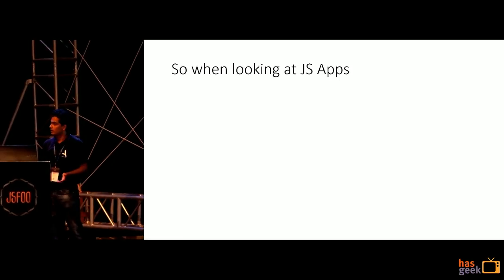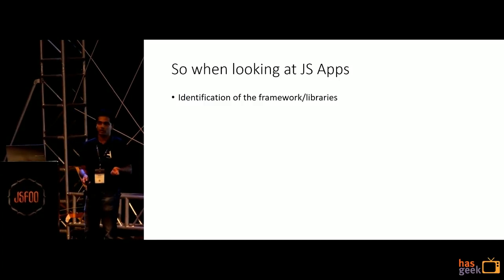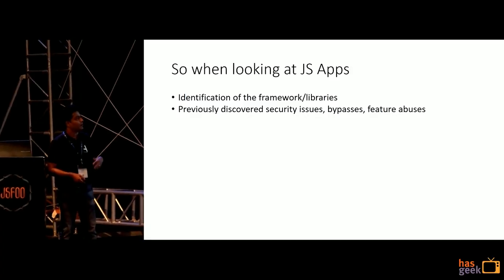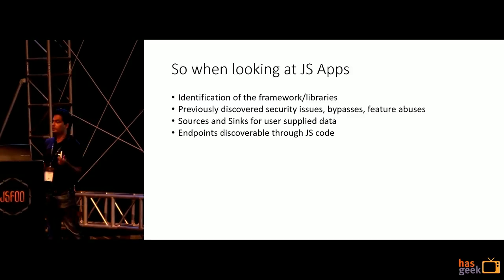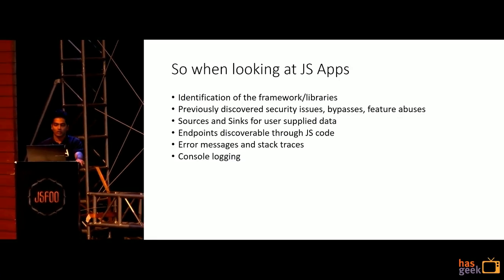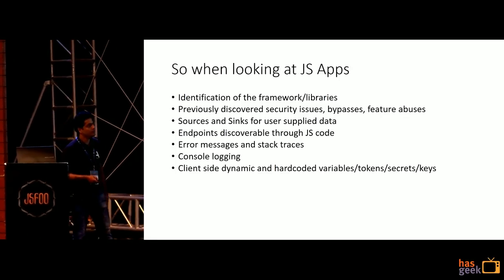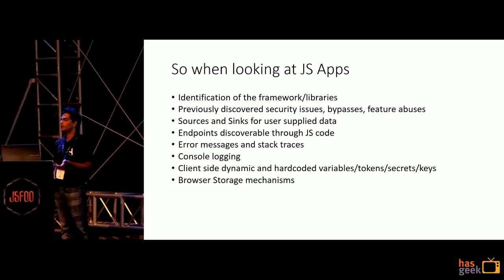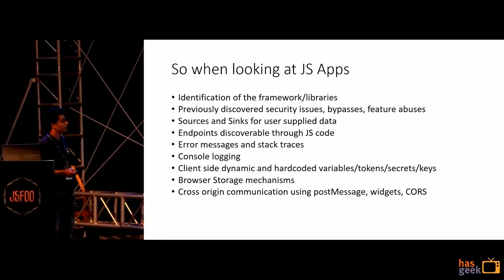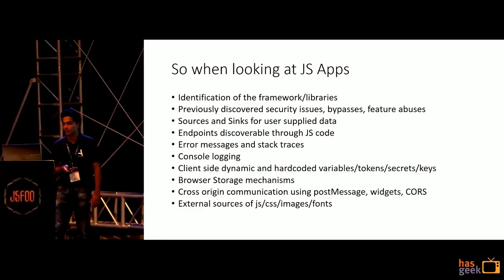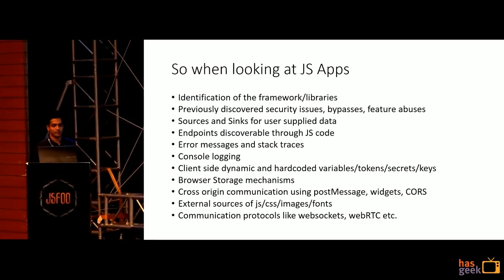When looking at JS apps, this is the takeaway of what attackers see and target: identification of frameworks and libraries — version numbers are clearly written in your JS files; previously discovered security issues; sources and sinks for user-supplied data; endpoints discoverable through JS code; error messages and stack traces; console messages; embedded hard-coded variables and tokens; browser storage mechanisms like local storage and session storage, which sometimes contain sensitive information; cross-origin communication; external sources of JS, CSS, images, fonts, and any static content loaded; and communication protocols like WebSockets and WebRTC.